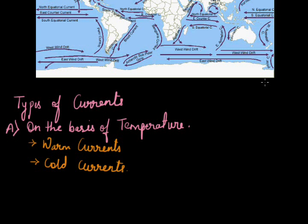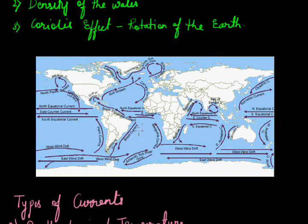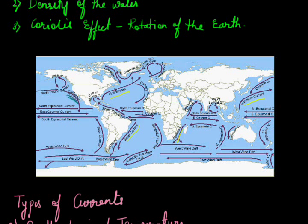As you can see in this map, different ocean currents are flowing around the world. Some of these are warm currents like the Brazilian current, the Gulf Stream, the Kuroshio current, the Agulhas current, and others. On the other hand, the cold currents include the California current, the Benguela current, the East Australian current, the Oyashio current, and so on. One thing to notice here is the origin of these two types of current.